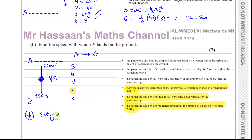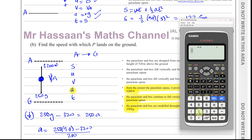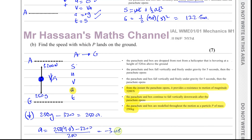So acceleration = (250 × 9.8 − 3200) / 250 = negative 3 meters per second squared. It's negative because the object is slowing down — it's decelerating.